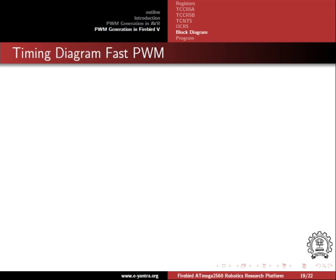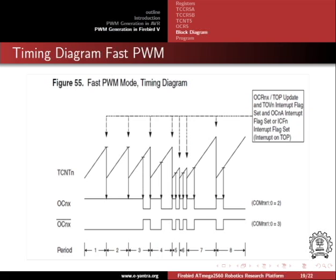Now we will look at the timing diagram for fast PWM. The TCNT register overflows to zero after it has reached the maximum count. The output for one cycle is: when TCNT is greater than OCR, the output is low; when TCNT is less than OCR, the output is high; and again on overflow, the output is set to high and the compare process continues.